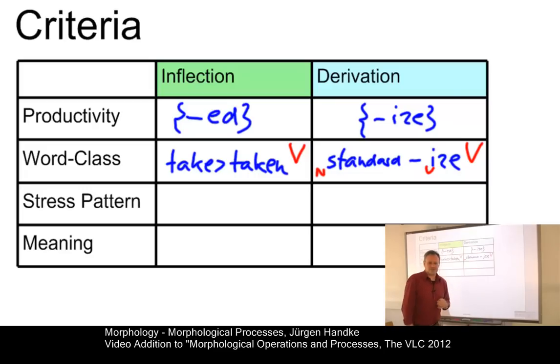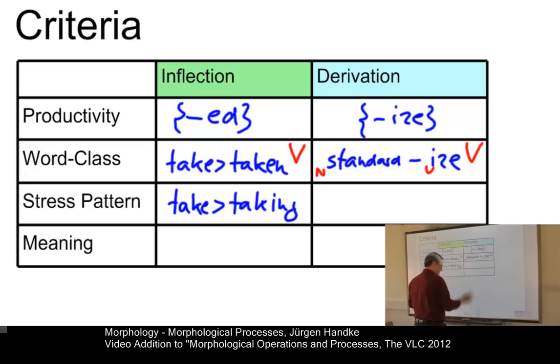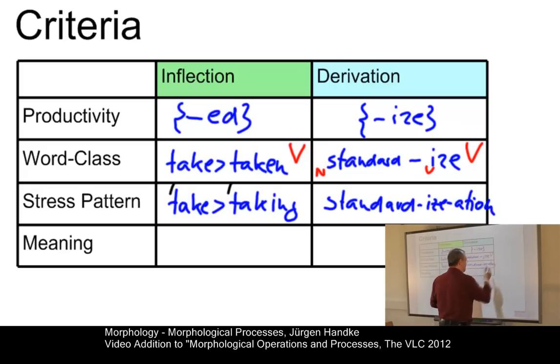The next criterion concerns the stress pattern. Whereas, in inflectional processes, if you take something like take and taking, the stress always remains the same. So, it's in both cases on the first syllable. Derivational processes may change the stress pattern. But, again, we have to be careful. This does not mean that all derivational processes involve a change of stress pattern, but some of them. So, if you compare standardize and standardization, then you immediately see that in standardize, the stress would have been on the first syllable. But, in standardization, the stress shifts towards the end of the new derivative.